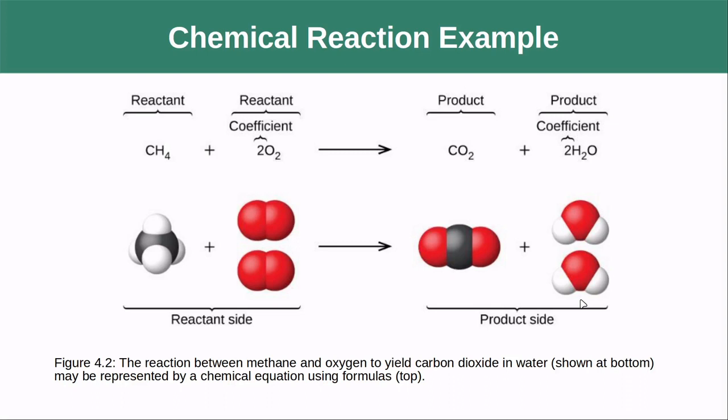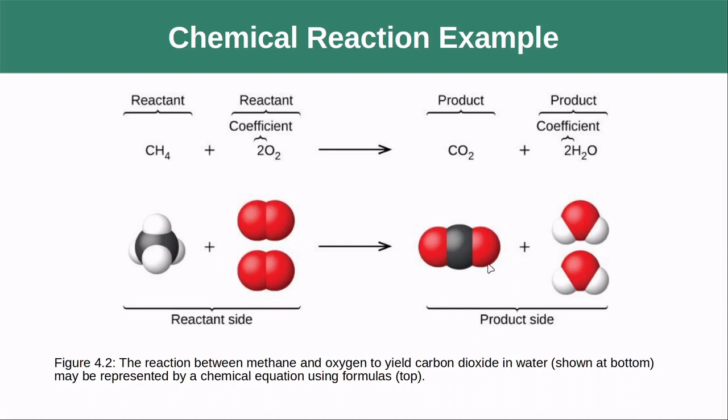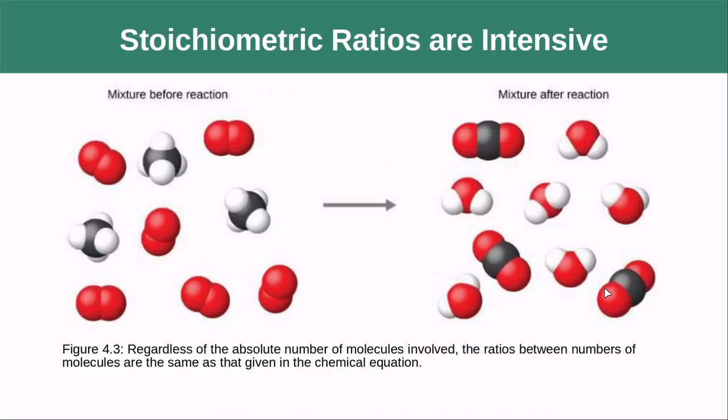Now, it's important to note that this is the smallest ratios that these can be found in. And this can always be scaled up. For instance, I could multiply both sides by three essentially, and I would have three methanes, six oxygens, and I would produce three CO2s and six water molecules. So we can always scale it up. Therefore, what we're really representing here is the smallest whole number ratios at which this reaction is going to take place.